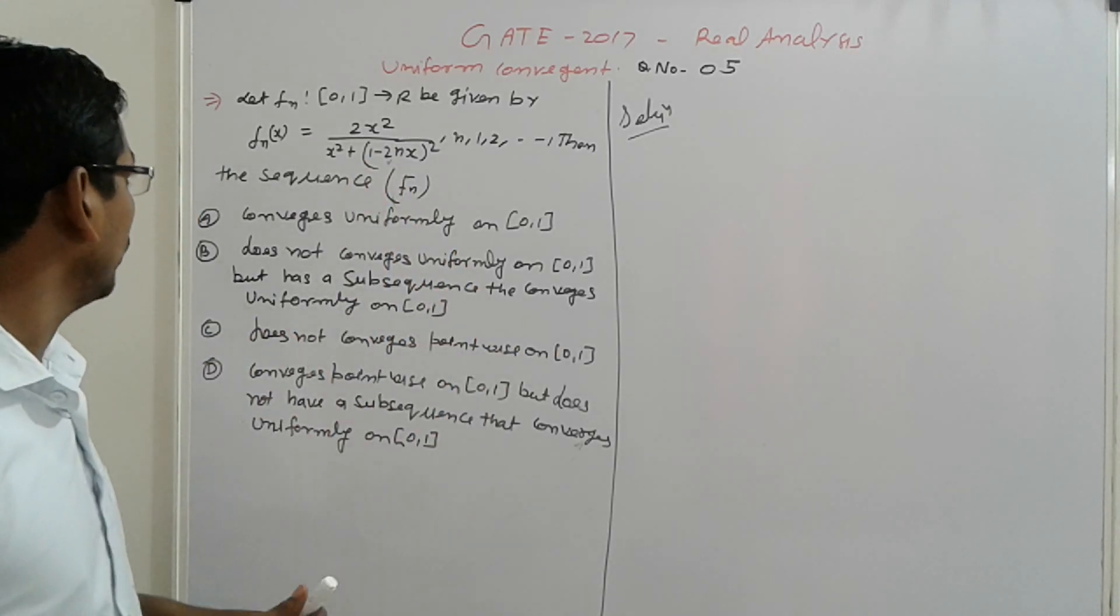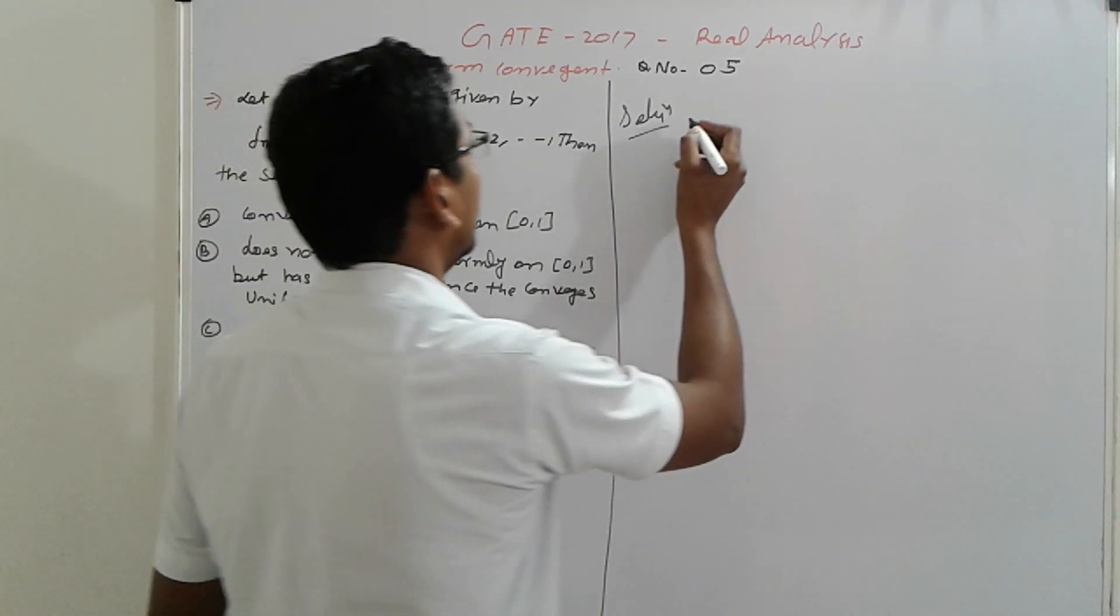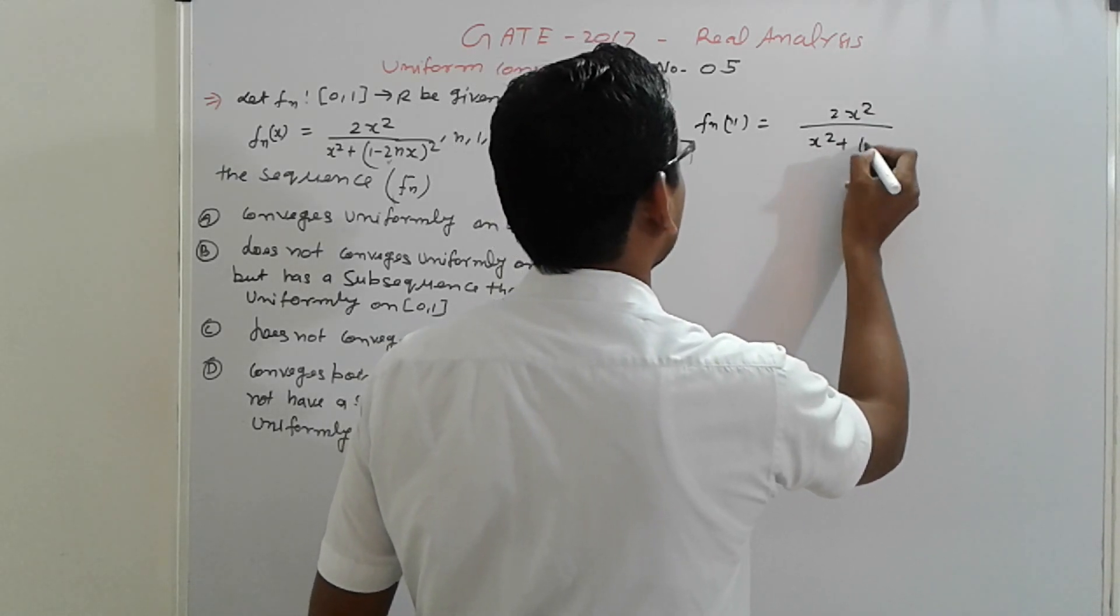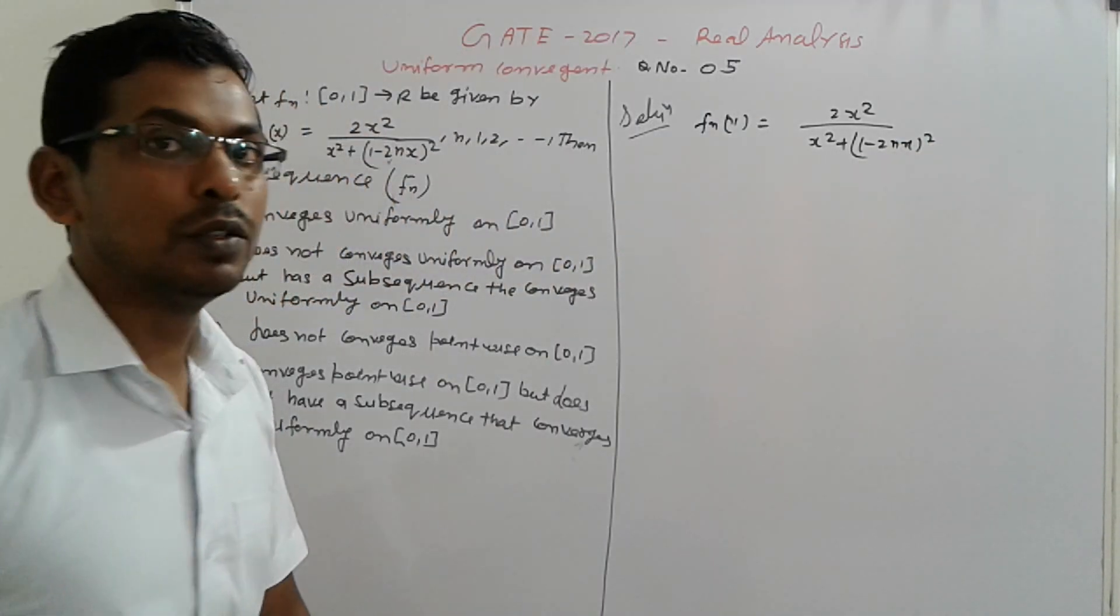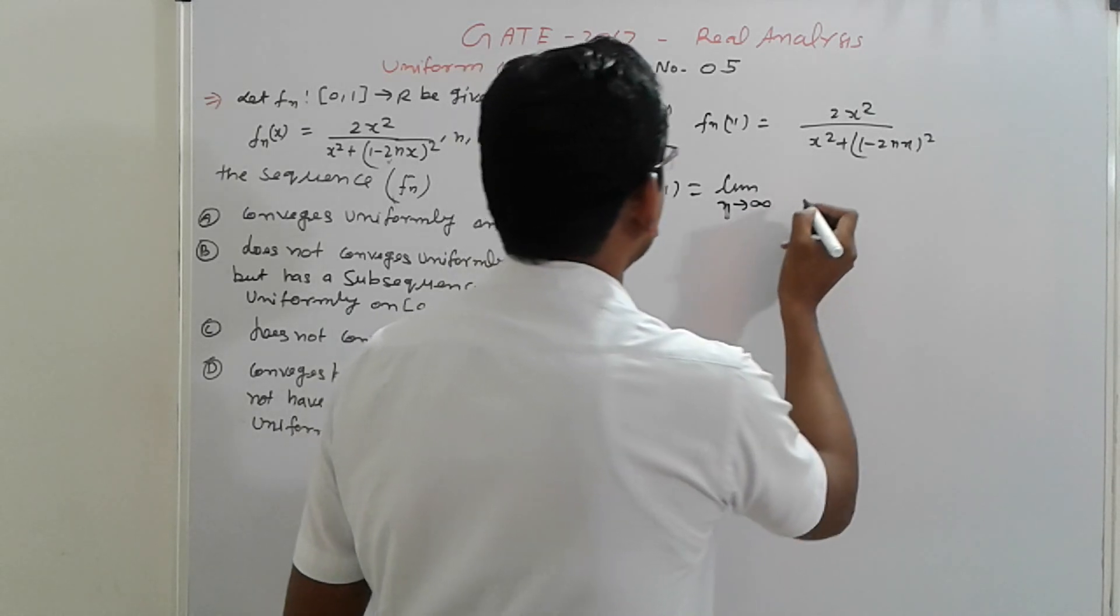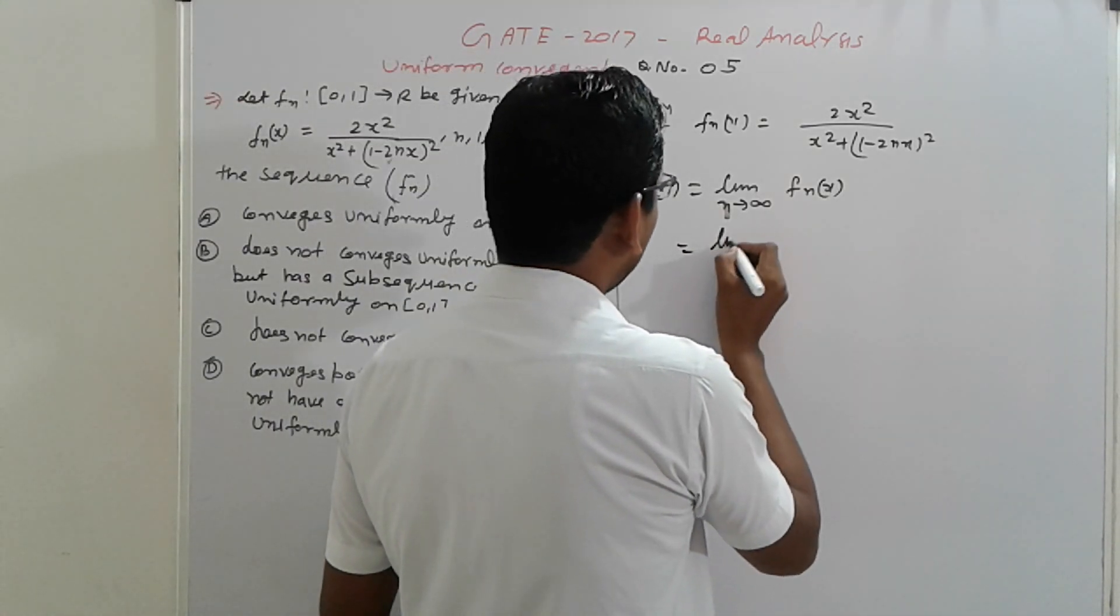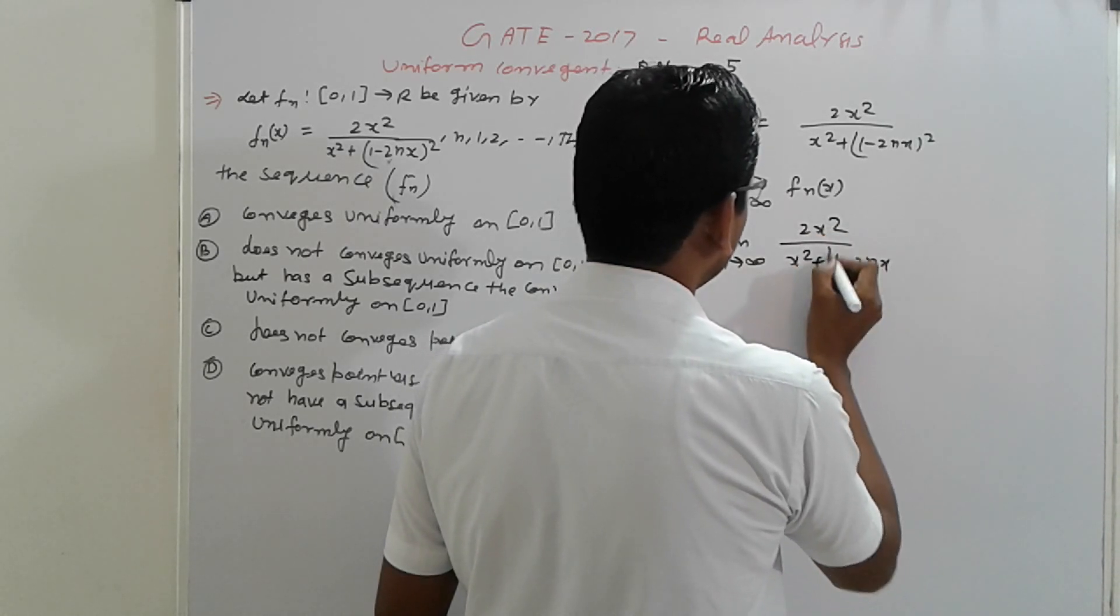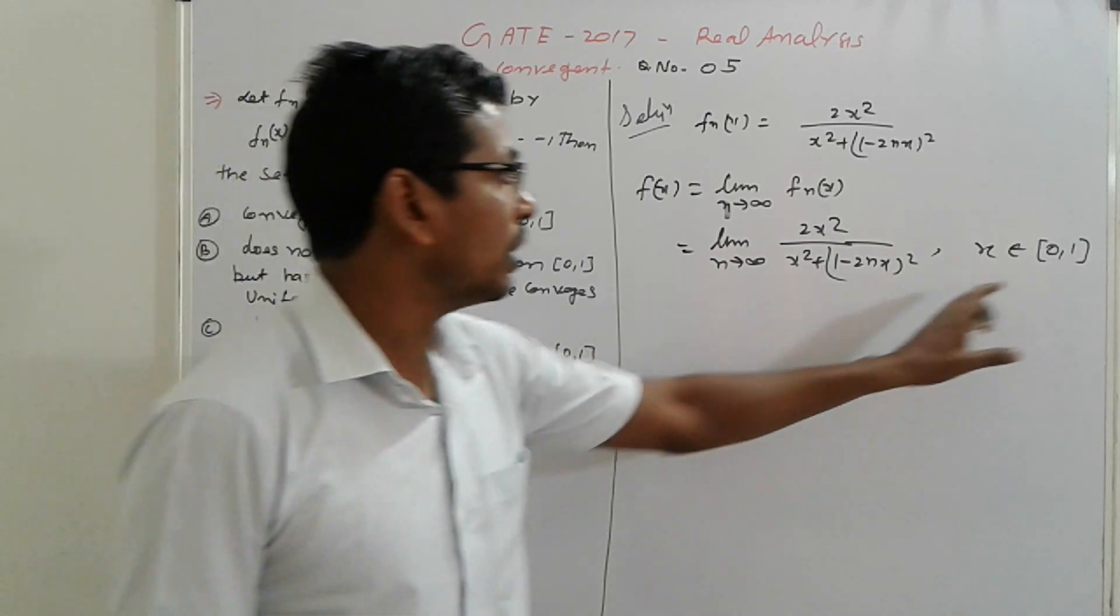First, if you work with the convergence, first you prove that point-wise convergence or not. The simple sequence is given, f_n(x) is given: 2x² upon (x² + 1 - 2nx)² is given. So first you prove that point-wise convergence, f(x) = limit n tending to infinity f_n(x) tending to 0 or another something. Here x belongs to [0,1].